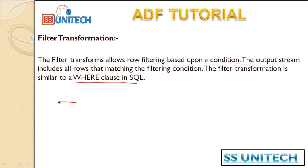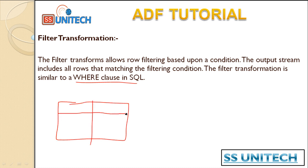The use case here is: we have a source containing employee data along with the department. We don't want to load data for all departments — we just want to load data only for the IT department or the HR department. In that scenario we can use the filter transformation.